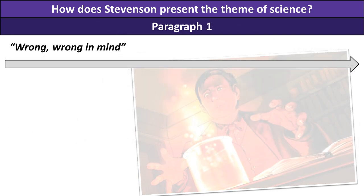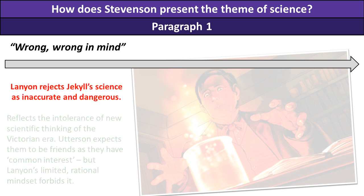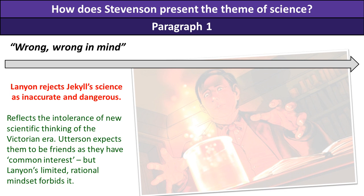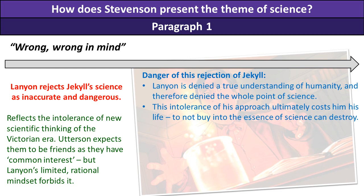First, I'm going to look at the quote 'wrong, wrong in mind' — what Lanyon says about Jekyll's thinking. He rejects his science as inaccurate and dangerous. This reflects the intolerance of new scientific thinking in the Victorian era. Utterson expects them to be friends given their common interest, but Lanyon's limited rational mindset forbids it. However, this rejection of Jekyll is dangerous for Lanyon. Lanyon is denied a true understanding of humanity, and therefore denied the whole point of science — if science is not about helping people and improving understanding to fuel human progress, what is the point? This intolerance ultimately costs him his life.